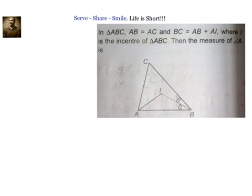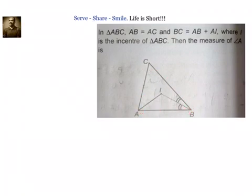Hello friends, welcome back. We have been given triangle ABC in which AB equals AC and BC equals AB plus AI, where I is the incenter of triangle ABC. We need to find the measure of angle A. We have been given AB equal to AC and BC equal to AB plus AI where I is the incenter of triangle ABC.